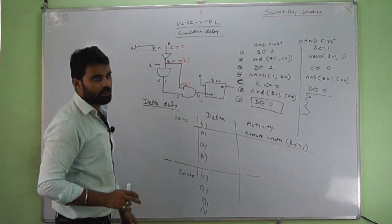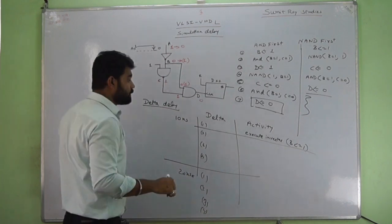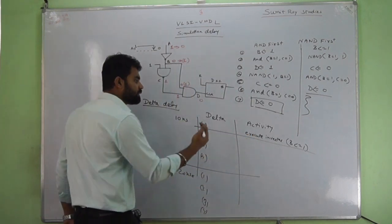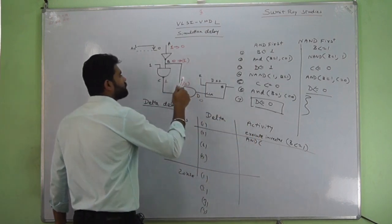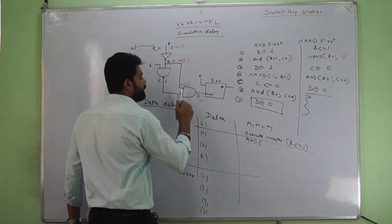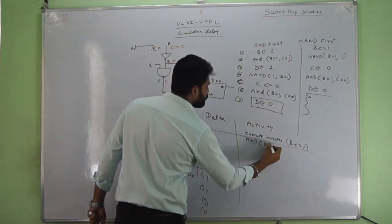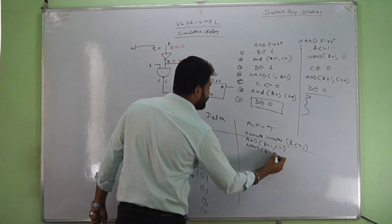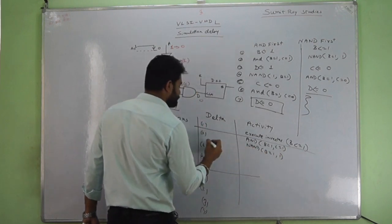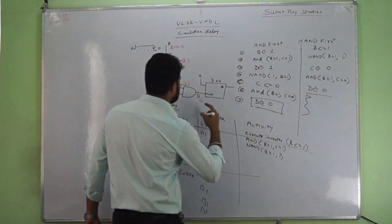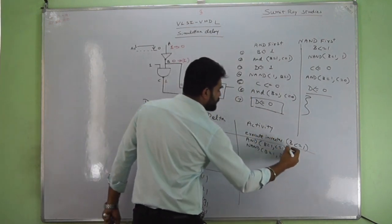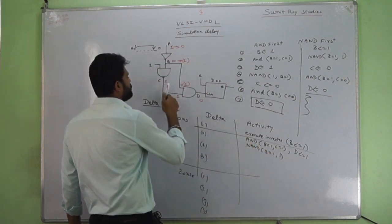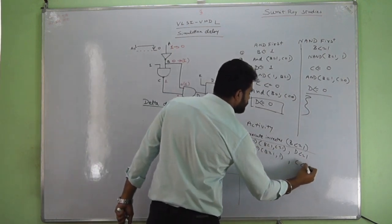In the second delta, since both AND and NAND can work fast, both gates are executed with whatever input is available. AND is executed with B equal to 1 and C equal to 1, and NAND is also executed with B equal to 1 and input 1. AND gives result D equal to 1, and NAND gives result C equal to 0.